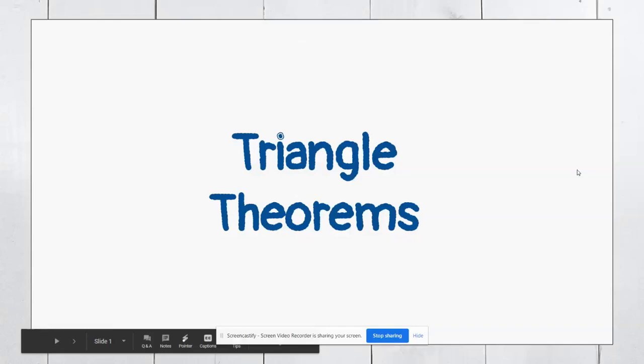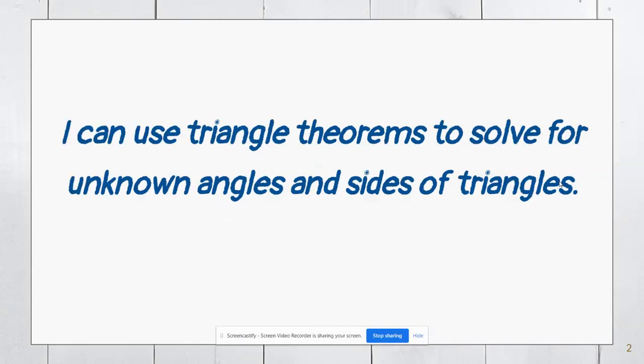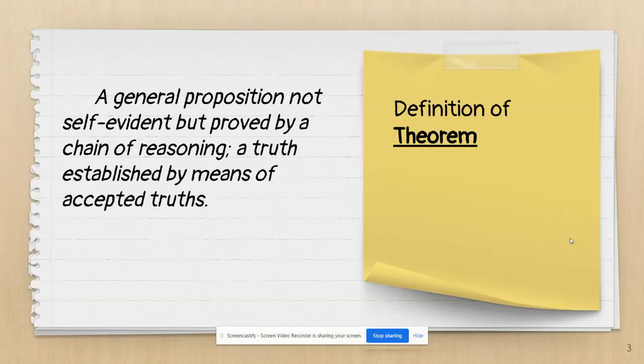This lesson is about triangle theorems, and ultimately our goal is going to be able to use these theorems to find unknown angles and sides of triangles. Before we go any further, it's important that we understand that a theorem is a proposition, but it has been proved by reasoning. We're going to use a lot of theorems in this part of math, and we're going to have a lot of information about these different theorems thrown at you.